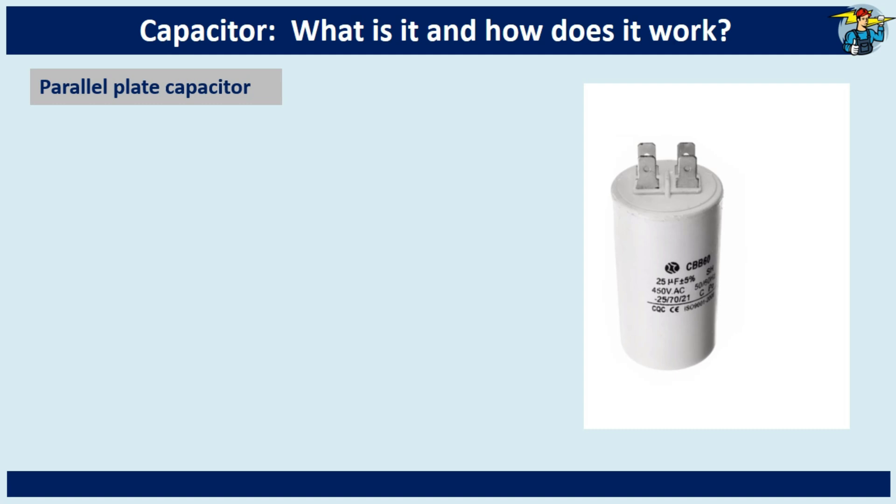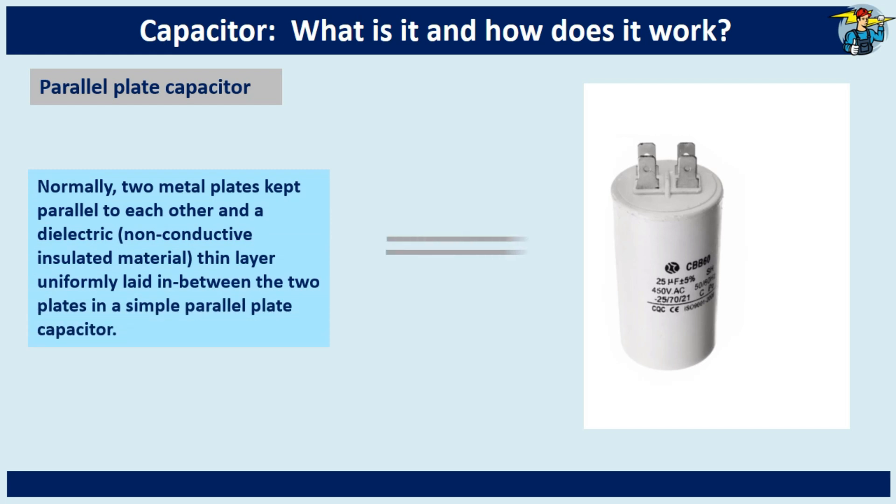Parallel plate capacitor is the basic capacitor where you can understand the function of it easily. It typically has two metal plates held parallel to each other, and a thin layer of dielectric or non-conductive insulating material is placed evenly between these two plates.